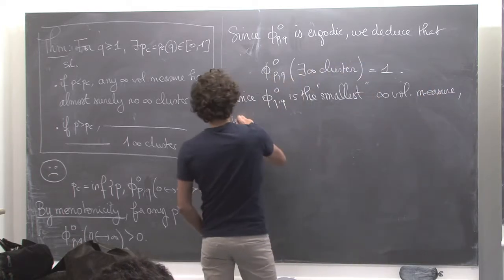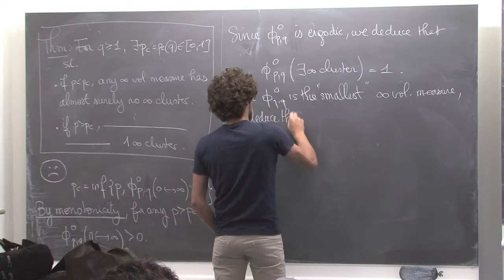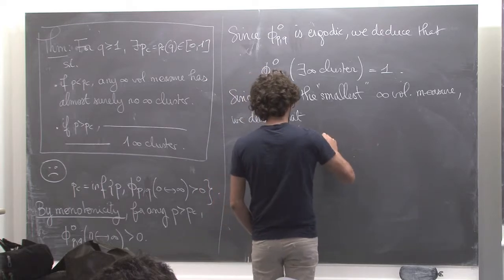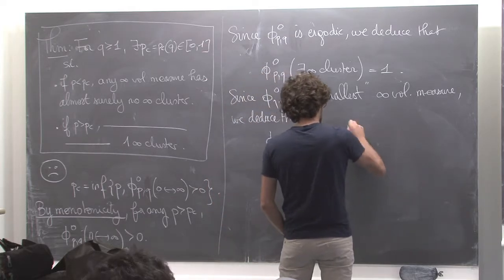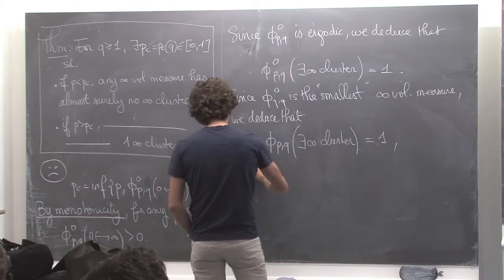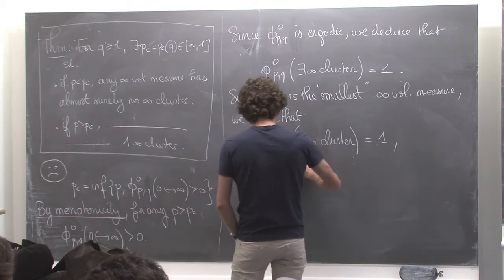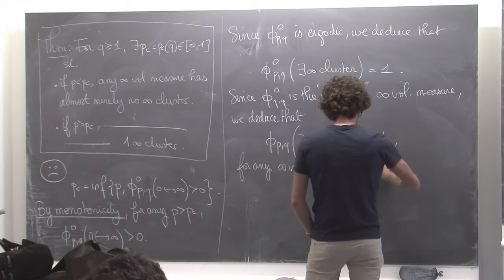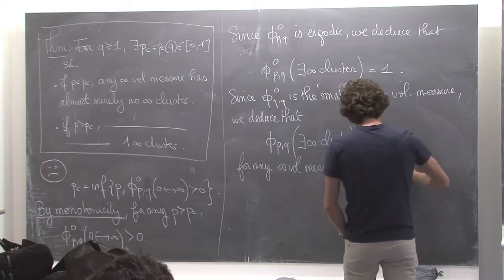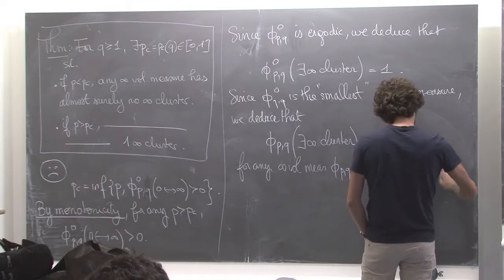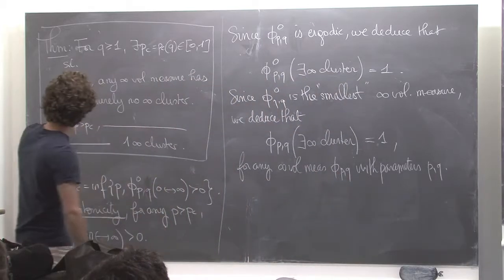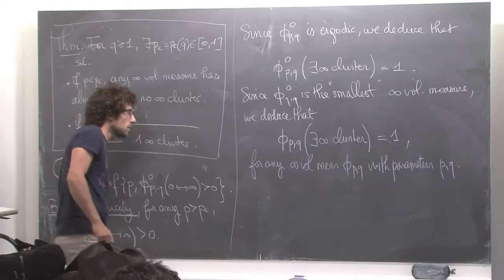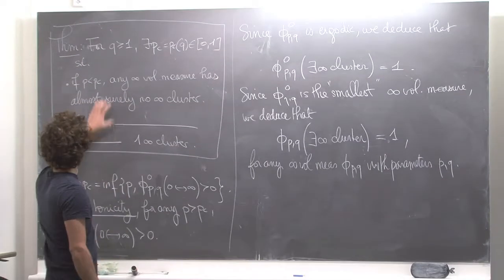We deduce that the probability of there existing an infinite cluster is always equal to one for any infinite volume measure phi(P,Q) with parameters P and Q. So already we have half the result — we have this second part. Now let's try to see if we can get the first one.